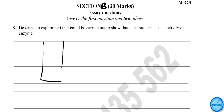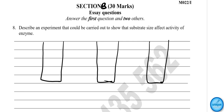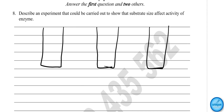We will use three test tubes for this experiment, and the tissue we will use is liver tissue. Liver tissue contains an enzyme called catalase, which we will be investigating.